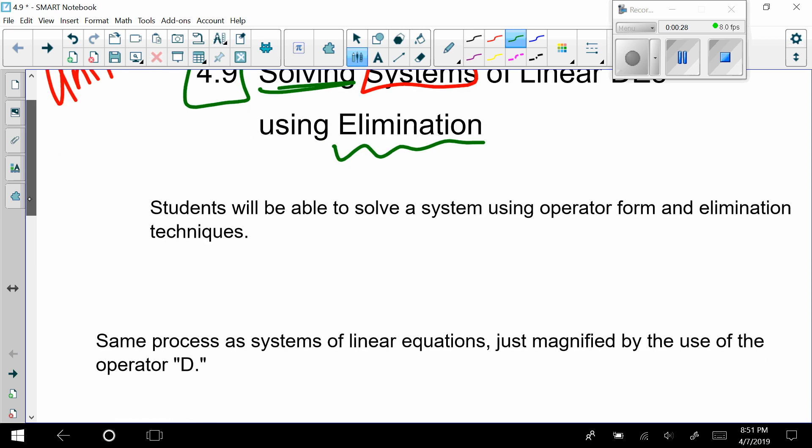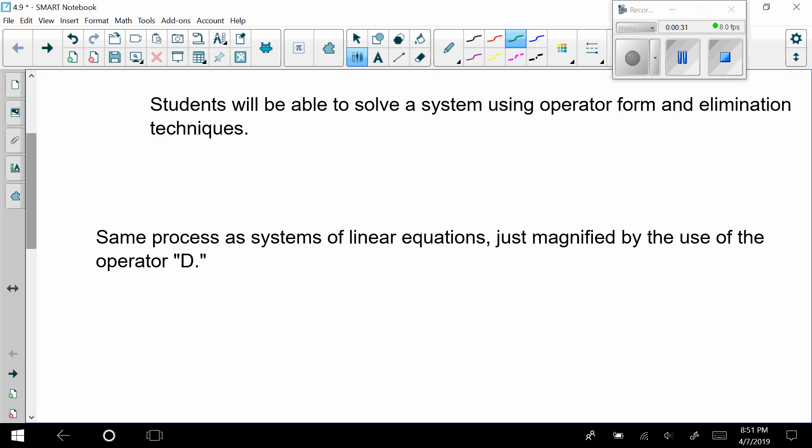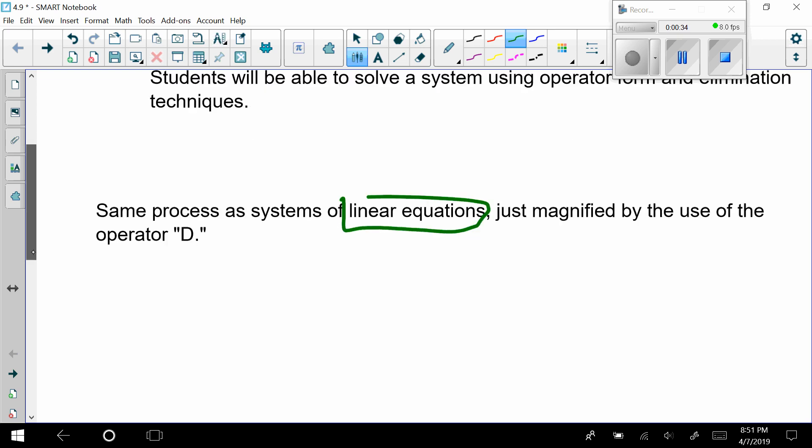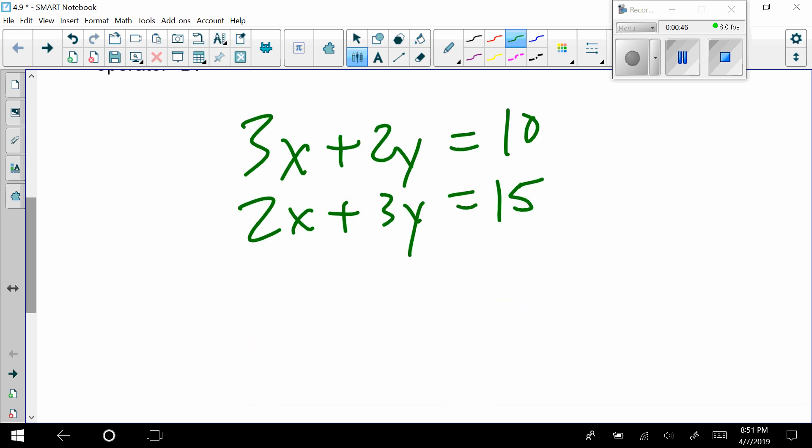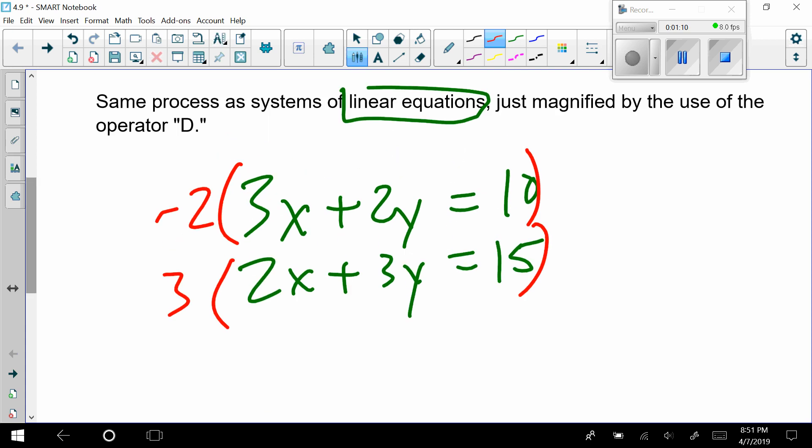In the elimination method, we're going to be implementing the same type of thing that we did back in regular linear equations. You had something like negative 2 times 3x plus 2y equals 1, and 3 times 2x plus 3y equals 15. What you did is you tried to get one of these variables to match with opposite signs. You should know right away that if I was going to get rid of the x's, I would multiply those through, and I should get something to cancel out.